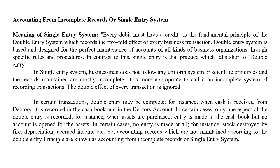In certain cases, no entry is made at all — for example, stocks destroyed by fire, depreciation, accrual income, etc. Accounting records which are not maintained according to the double entry principle are known as accounting from incomplete records, or the Single Entry System.